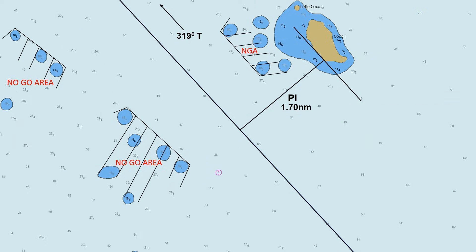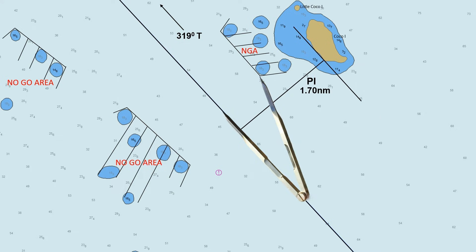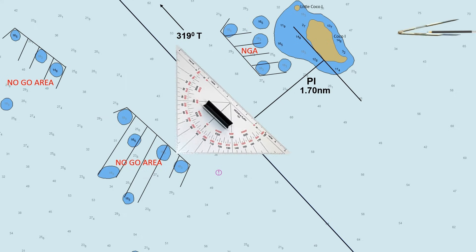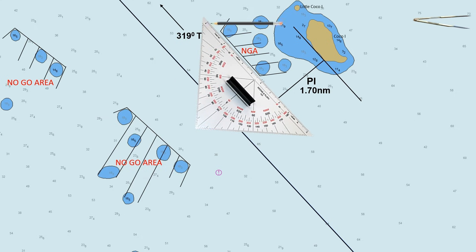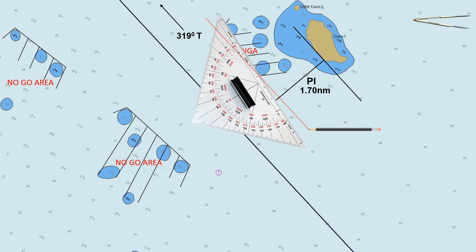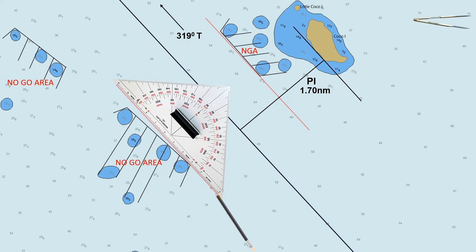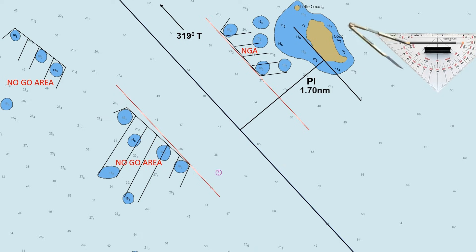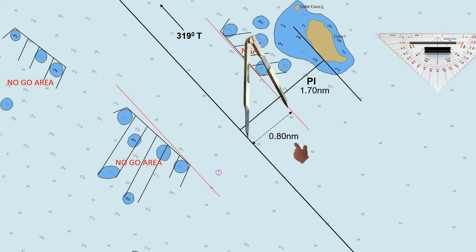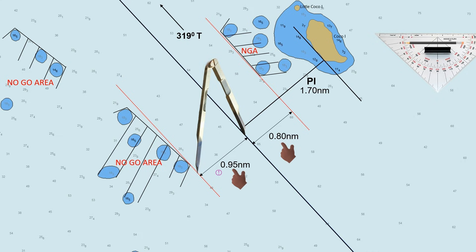To do this, in your paper chart or electronic navigational chart, determine the distance of the navigable water on both sides of the planned track. Draw a line along the no-go area parallel to the planned track — it should be done on both sides — then measure the distance from the planned track. In this chart, the room for safe water on the starboard side of the planned track is 0.80 nautical mile, and on the port side, 0.95 nautical mile.